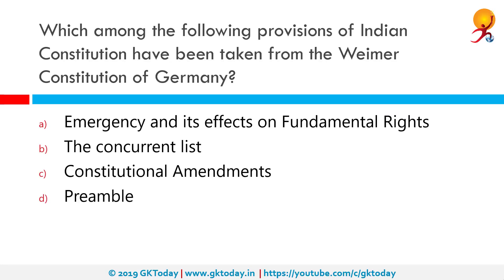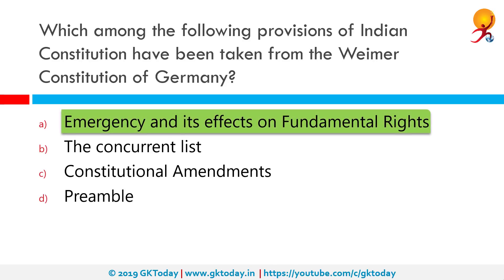Which among the following provisions of the Indian Constitution have been taken from the Weimar Constitution of Germany? The correct answer is emergency and its effects on fundamental rights. Other borrowed ideas include the parliamentary form of government from the British Constitution, fundamental rights from the US Constitution, and directive principles of state policy from the Constitution of Ireland.